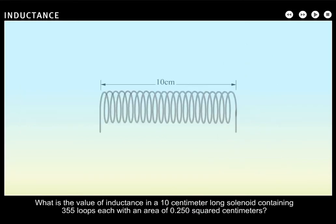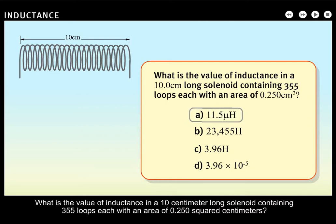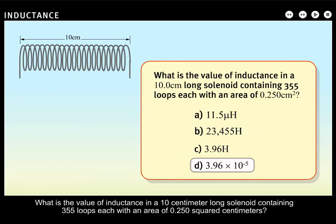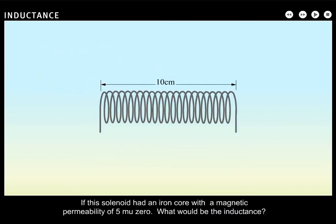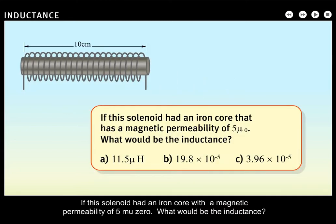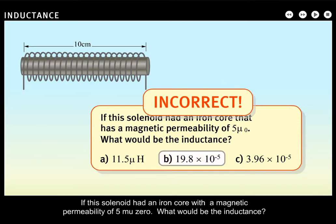What is the value of inductance in a 10-centimeter-long solenoid containing 355 loops, each with an area of 0.250 square centimeters? [Correct.] If this solenoid had an iron core with a magnetic permeability of 5 mu-zero, what would the inductance be? [Correct.]